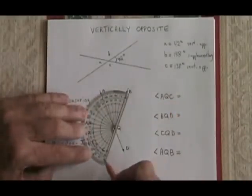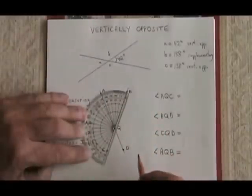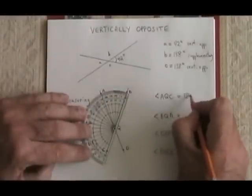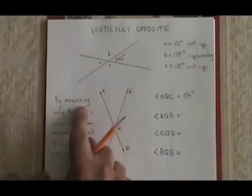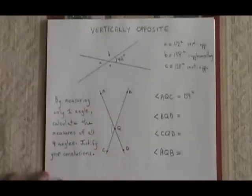Angle AQC is about 134 degrees. And I got that measurement by measuring directly with the protractor, and that is my only one angle that I'm allowed to measure by the conditions of the question.